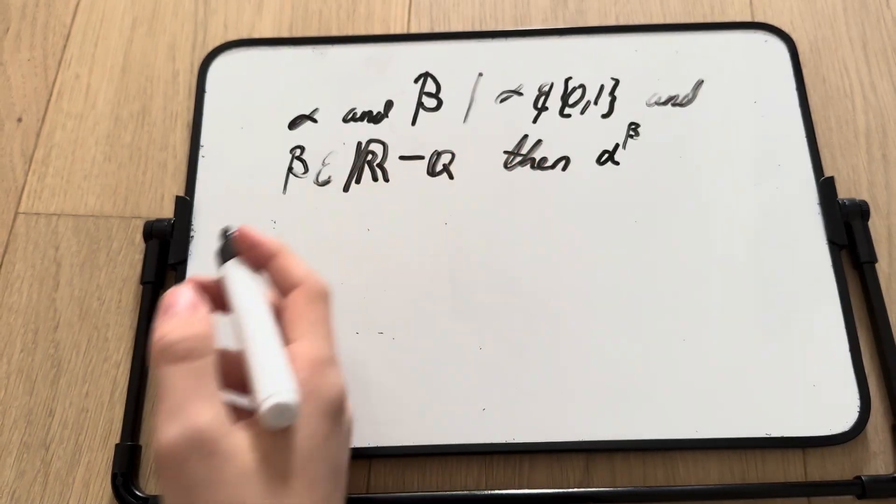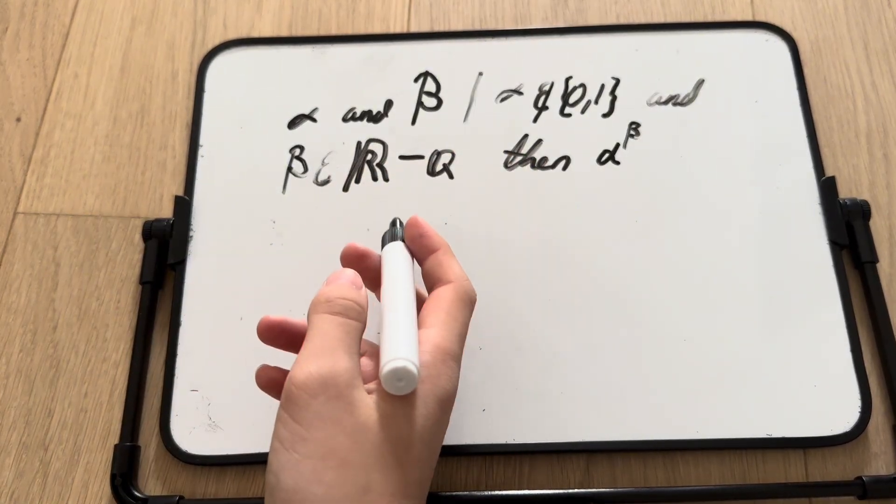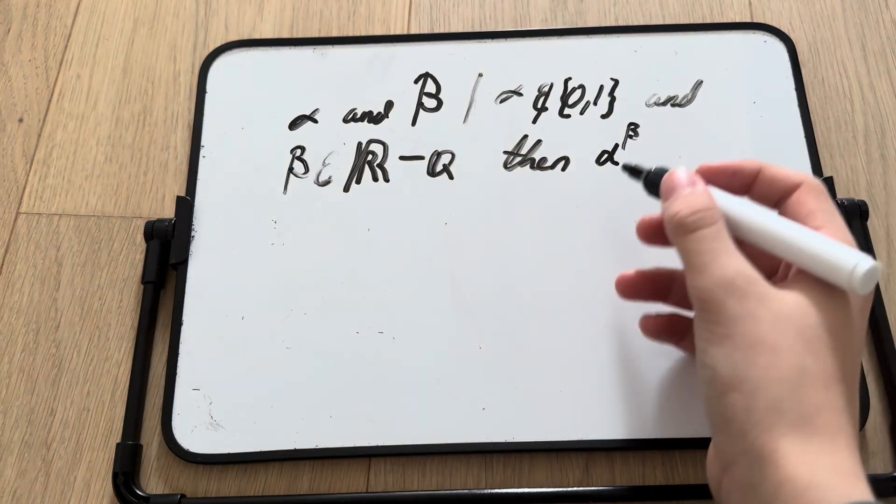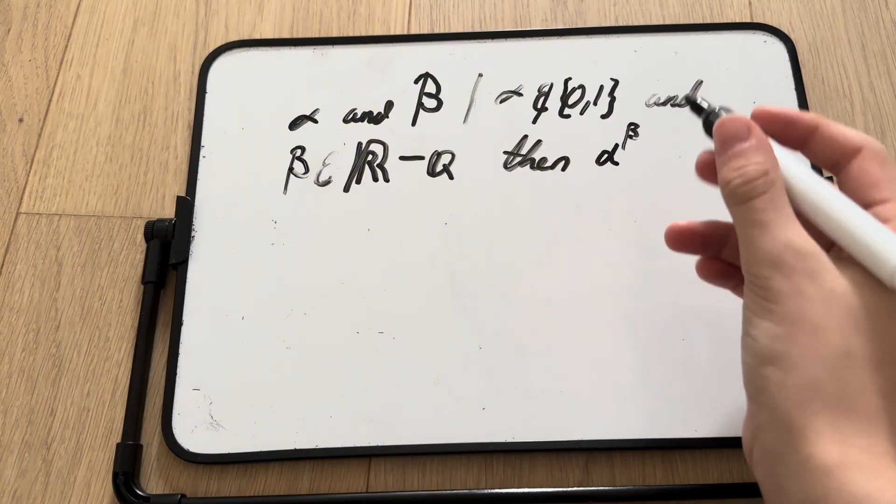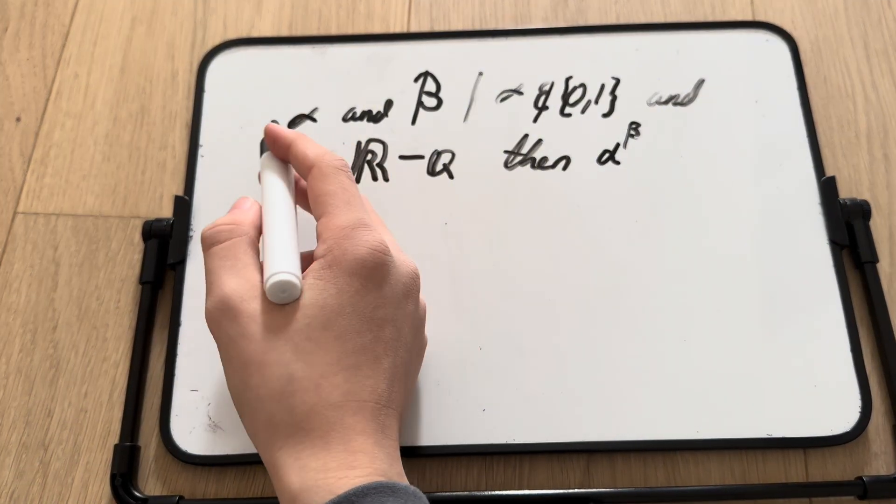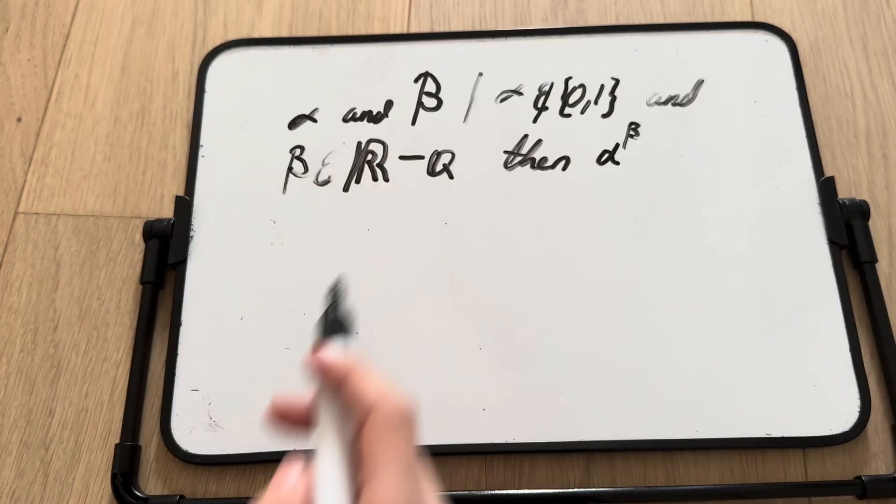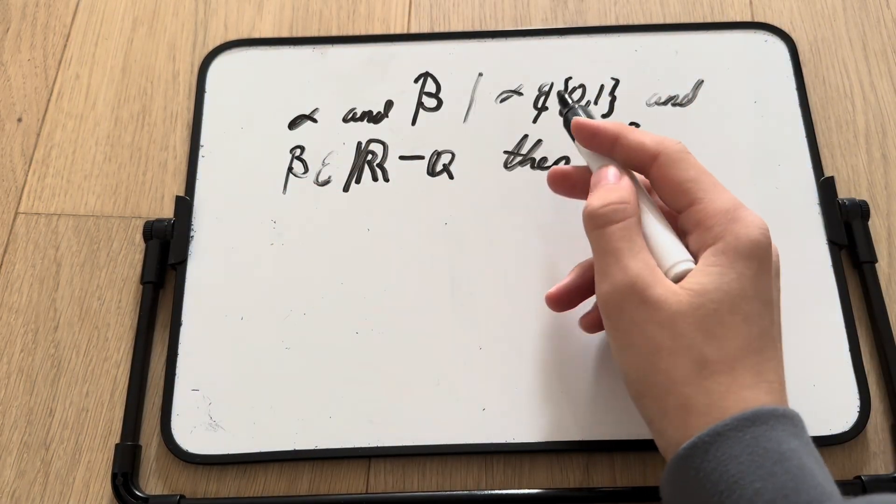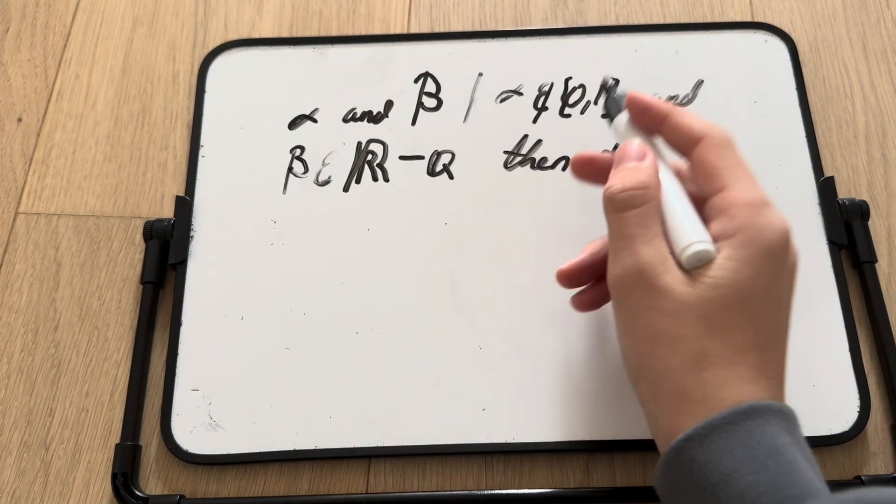So since we know e to the power of negative pi over 2 is just i to the i, then we can use his theorem. His theorem states that if we have a and b, such that a is not equal to 0 or 1,